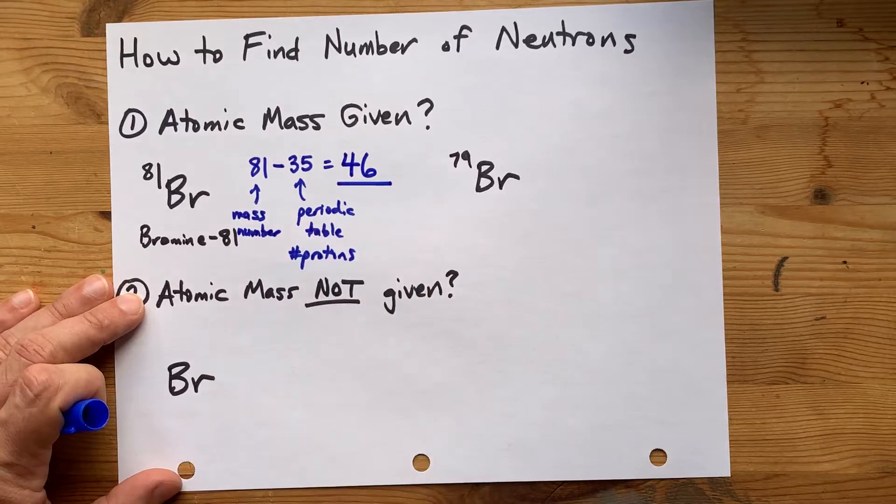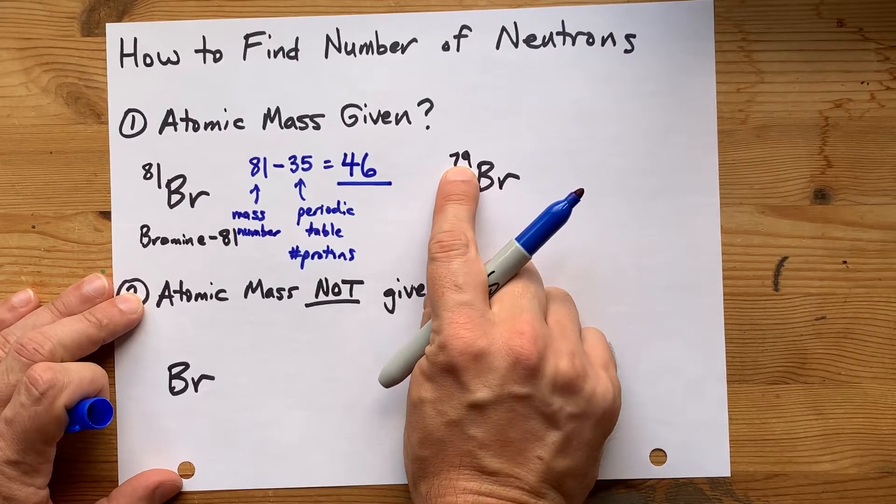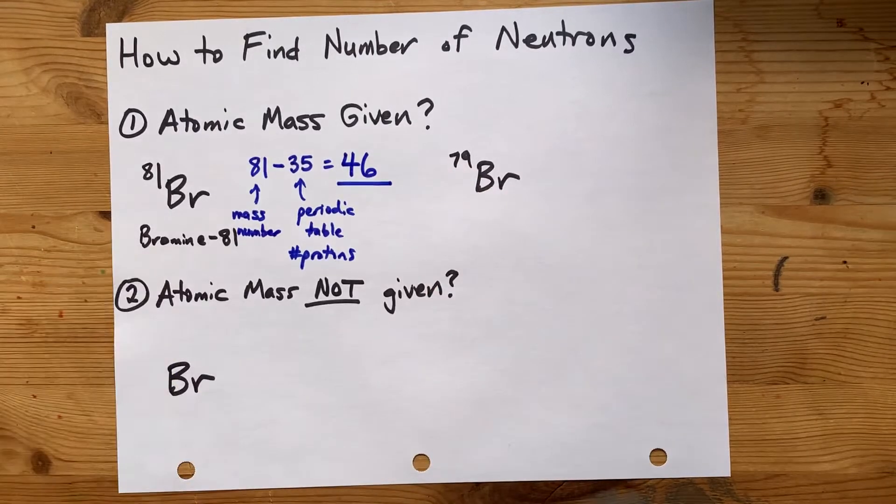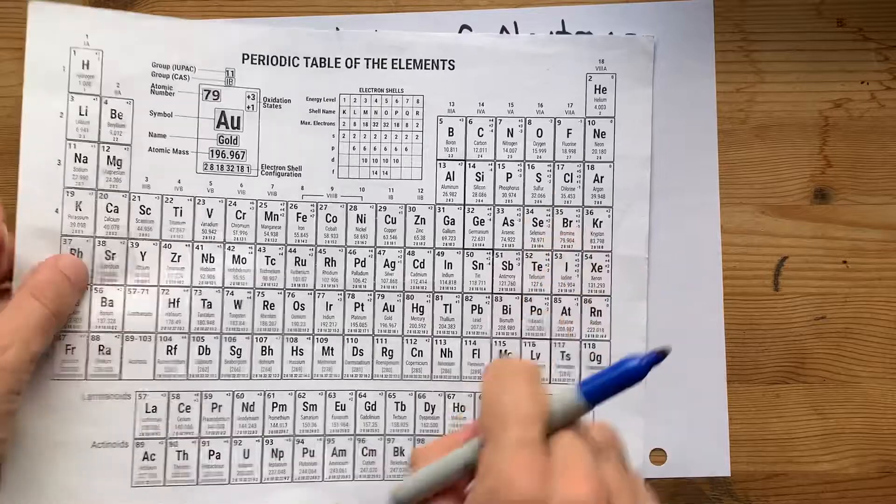Bromine 81 has 46 neutrons. Let's try it for bromine 79, which you'll notice. Bromine always has 35 protons. It says so right here.